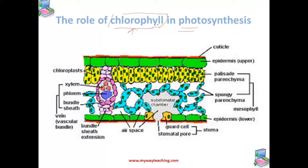Chlorophyll is present in every leaf of a green plant in the form of hundreds of tiny structures called chloroplasts. Here you can see these green structures — these are nothing but chloroplasts.